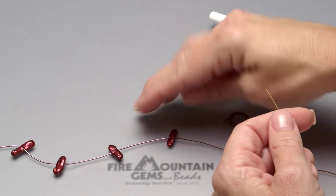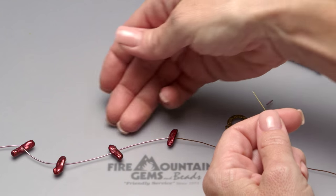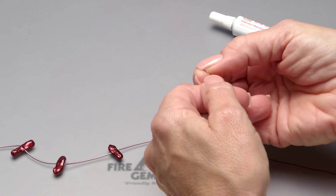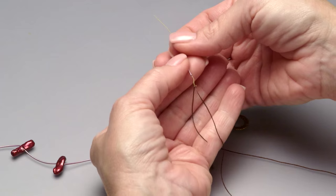So we've strung the beads in our pattern and actually used French wire as a bead in this design. We'll string on the second piece of French wire, a quarter inch length, just like the beginning.